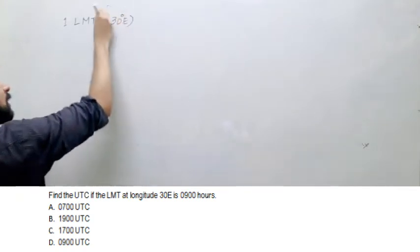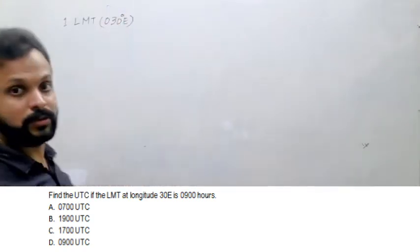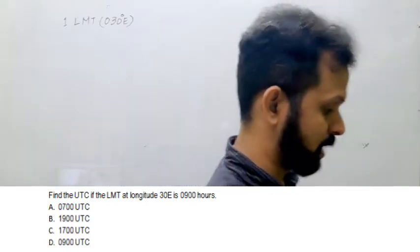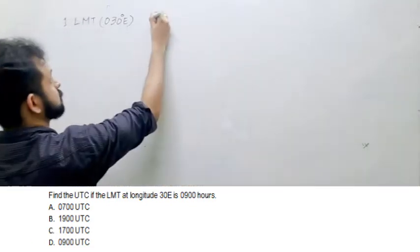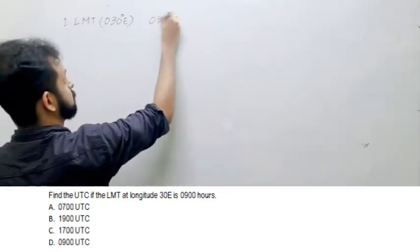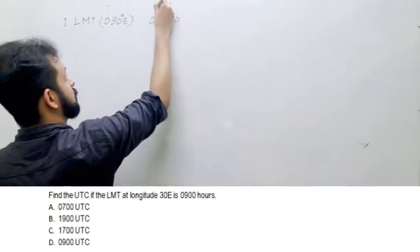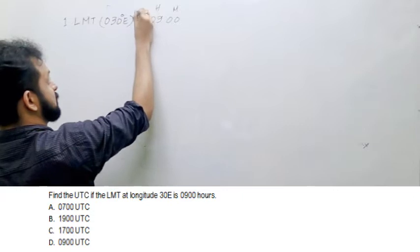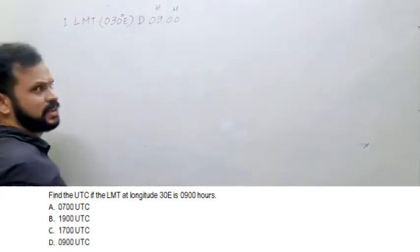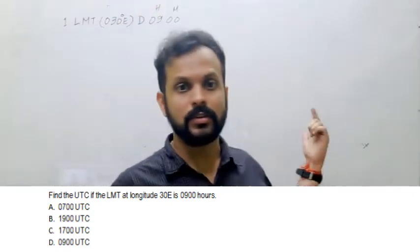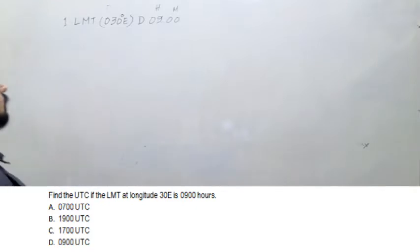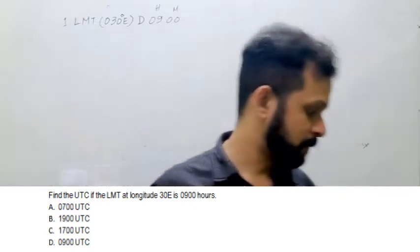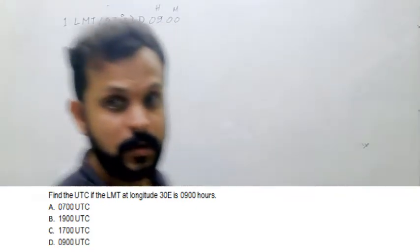Latitude is not mentioned here because it is not required. Even if it is given, you don't have to use it. The time is 0900, so this is the hour and this is the minute. Let's put a day here as well — day is D. What is the question? You have to find out the UTC.